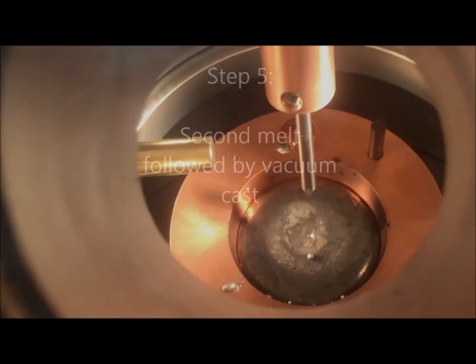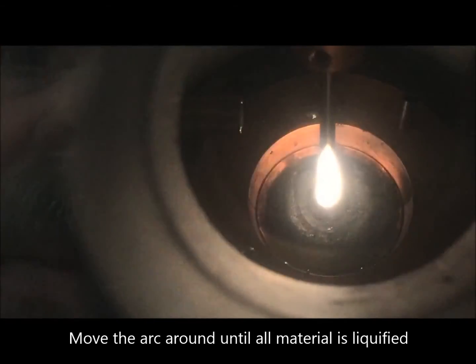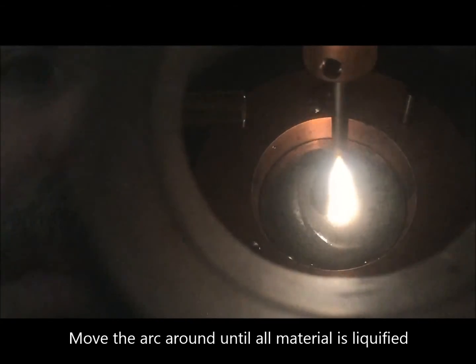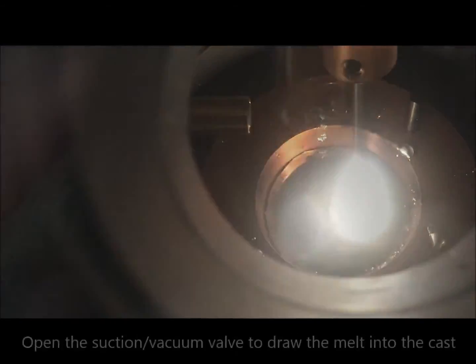Once you have achieved a homogeneous blend, simply open the suction casting valve and the molten materials draw into the mold cavity, resulting in a finished sample ready for testing.